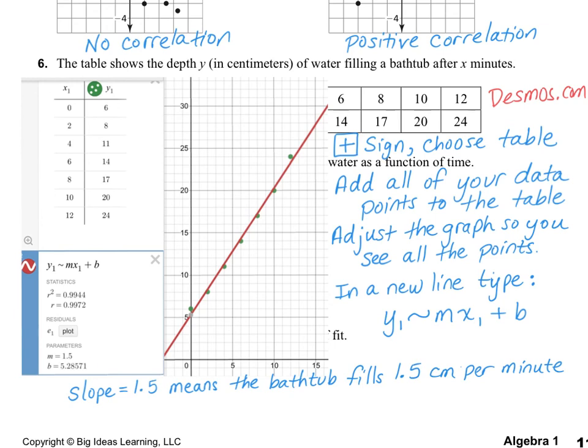Next we have the B. B is our Y intercept, so that's 5.3. So that means that the bathtub was 5.3 centimeters full at the start.